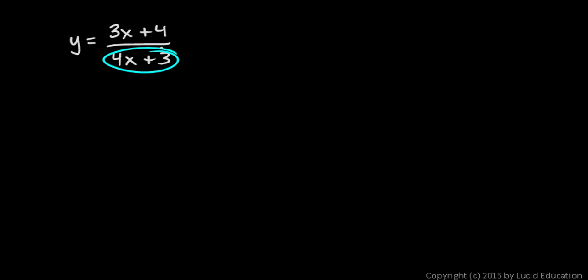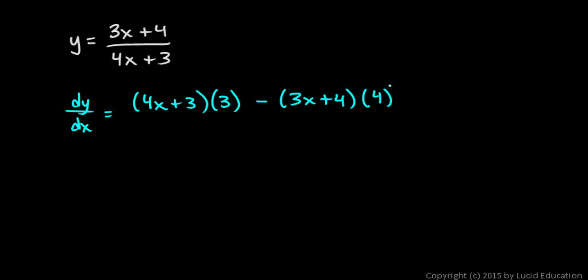By low I mean the denominator and high I mean the numerator. So dy dx, the derivative, will be low, that's the denominator, times the derivative of the numerator, which is just 3, minus high, which is the numerator 3x plus 4, times the derivative of the denominator, which is just 4.